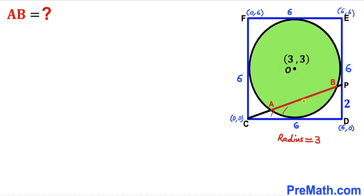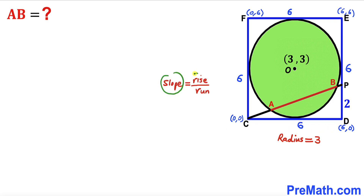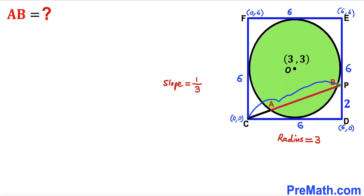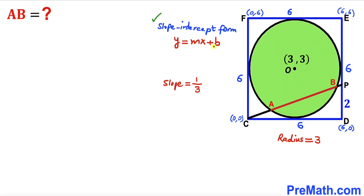Now let's make an observation. In triangle CDP, segment PD is 2 and segment CD is 6. Recalling that slope is defined as rise divided by run: our rise is 2 and our run is 6, so 2 divided by 6 reduces to 1/3. Thus the slope of line CP turns out to be 1/3.